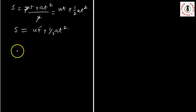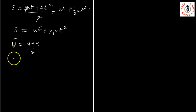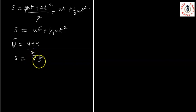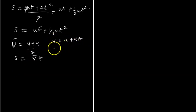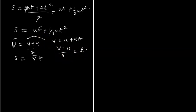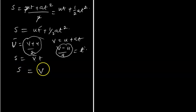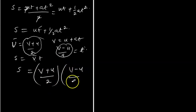Now let's derive the third equation of motion. Our distance S is given as average velocity V-bar times T, and our average velocity V-bar = (V + U) / 2. From our first equation V = U + AT, we can deduce that T = (V − U) / A. I can substitute these two equations, substituting for V-bar and for T, so that S = (V + U) / 2 × (V − U) / A.